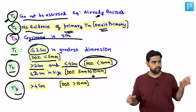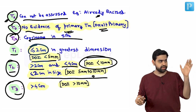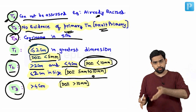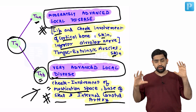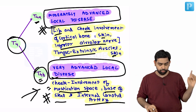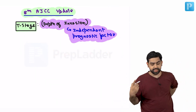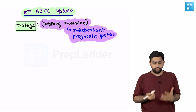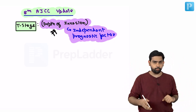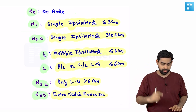To summarise: T1 is size less than two centimetres and depth of invasion less than five millimetres. T2 is two to four centimetres with depth five to ten millimetres. T3 is more than four centimetres or depth more than ten millimetres. T4A involves structures you can remove; T4B involves structures you cannot. The 8th AJCC added depth of invasion as an independent prognostic factor.